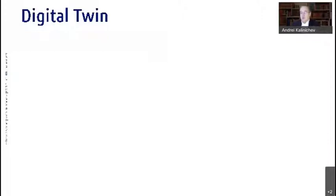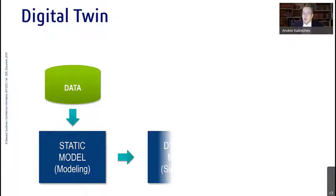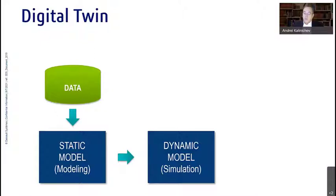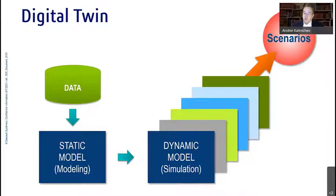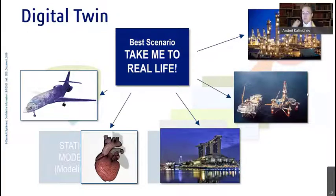The term 'digital twin' is all over the place, and I wanted to quickly clarify how it is structured. We start with data, we build a static model — we are very good at that in oil and gas. We build a dynamic model — for those in the reservoir business, imagine this as a fluid flow simulation model where you come up with different production scenarios. Based on that dynamic model, you build multiple scenarios, analyze them, refine the ones you like, and then take it to real life: building an aircraft, curing the heart, city management, or our upstream and downstream businesses. The overall approach is exactly the same.